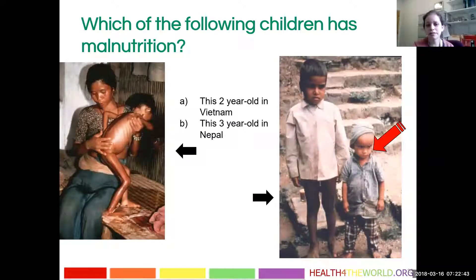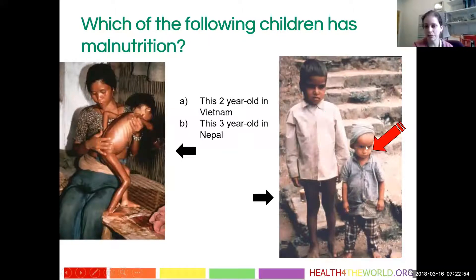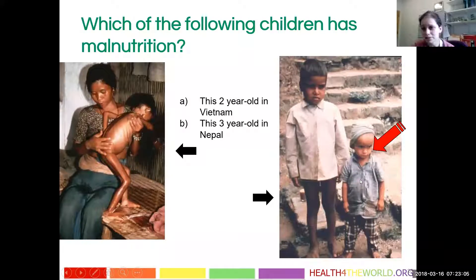This is kind of a trick question: which of these children has malnutrition — this two-year-old in Vietnam or this three-year-old in Nepal? This child has acute malnutrition and wasting, and this child has chronic malnutrition or stunting. Chronic wasting will lead to stunting.